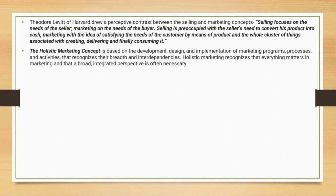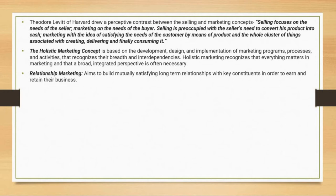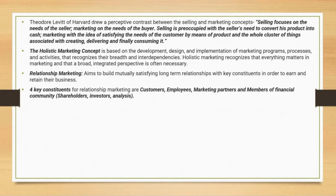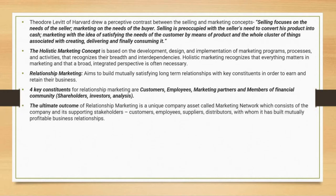What is relationship marketing? It basically aims to build mutually satisfying long-term relationships with key constituents in order to earn and retain their businesses. The four key constituents for relationship marketing are customers, employees, marketing partners, and members of the financial community, which includes shareholders, investors or analysts. The ultimate outcome of relationship marketing is a unique company asset called a marketing network, which consists of the company and its supporting stakeholders.